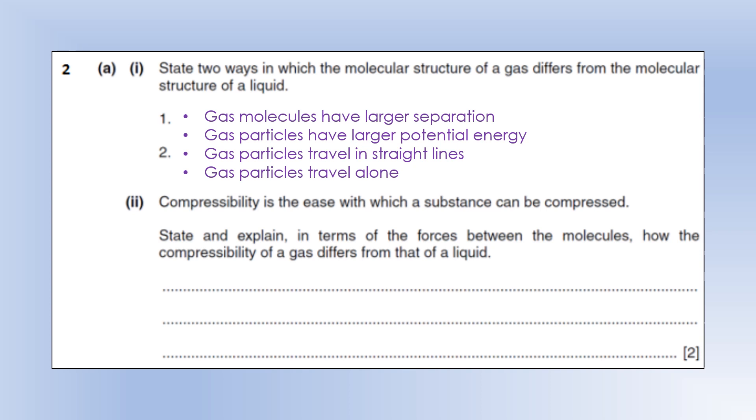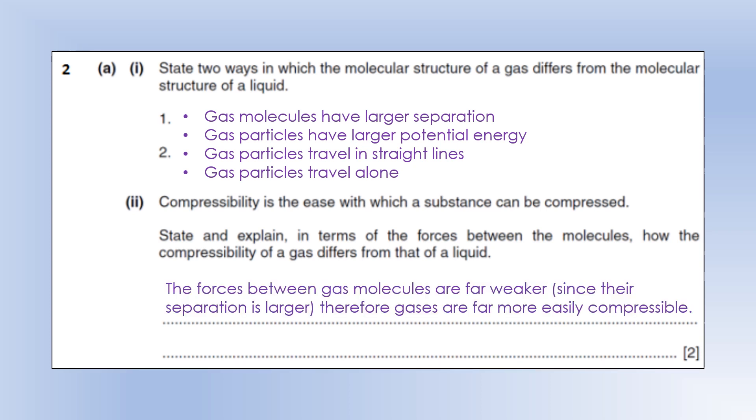So compressibility is the ease with which a substance can be compressed. State and explain, in terms of the forces between the molecules, how the compressibility of a gas differs from that of a liquid. Okay, so first of all, what is the difference? Well, a gas is much more compressible. It is very difficult to compress a liquid. You need a lot of pressure if you're going to do that. And the reason for that is because the force between gas molecules are far weaker because their separation is much larger. And so that's why gas molecules are more compressible and, incidentally, more easily expandable also.